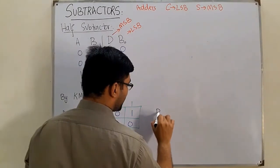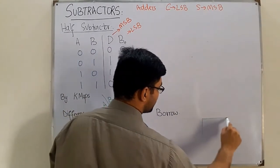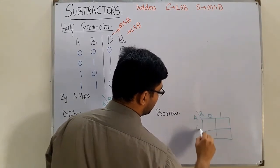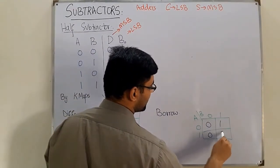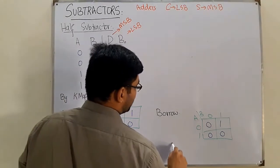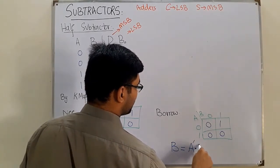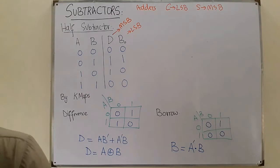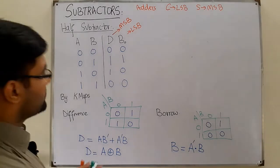Now for the borrow using a four-cell K-map: the values are 0, 1, 0, 0. There is only one 1, so the borrow expression is A complement AND B, i.e., A'B.